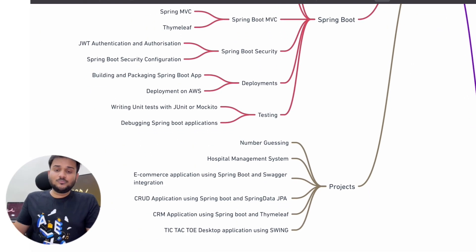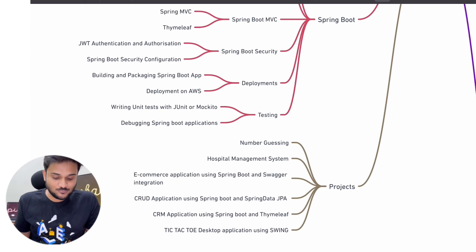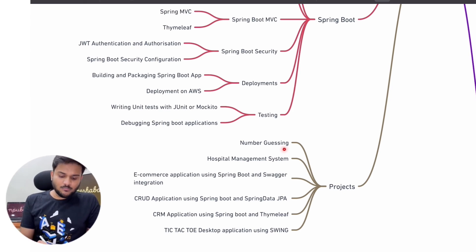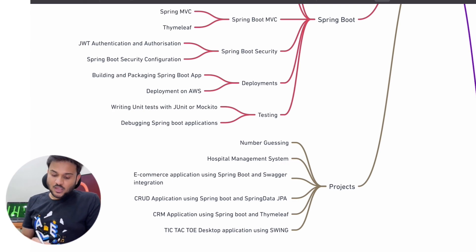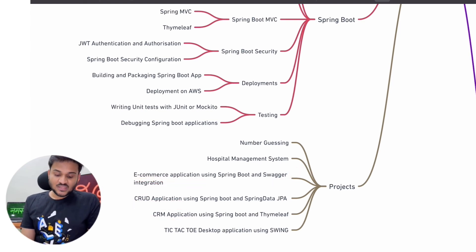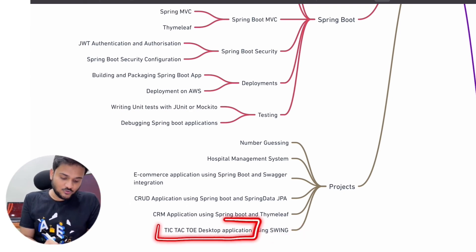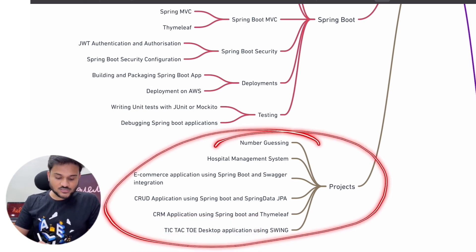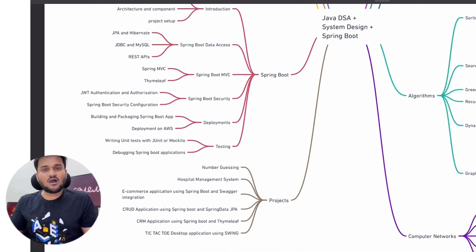The projects we are going to build throughout the course include: a number-guessing console application and a hospital management system structure while learning core Java and DSA. While learning Spring, we will prepare an e-commerce application, a CRM application, and a basic CRUD blog application. We will also use the Swing framework to prepare desktop applications, including a tic-tac-toe desktop application.